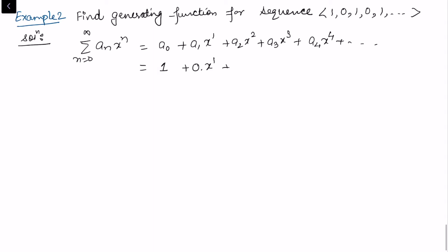Continuing, a₃ = 0 times x³ and a₄ = 1 times x⁴, and so on.